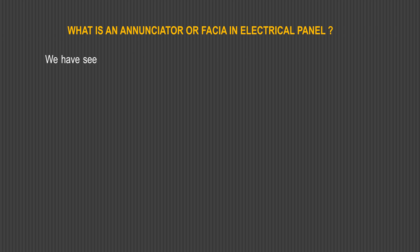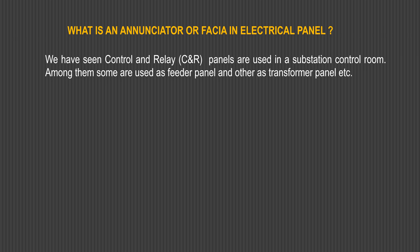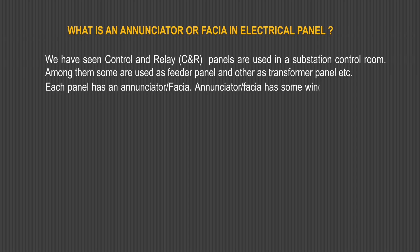We have seen that control and relay (CNR) panels are used in a substation control room. Among them, some are used as feeder panels and others as transformer panels. Each panel has an annunciator or fascia, which has some windows to illuminate the problem written on it.